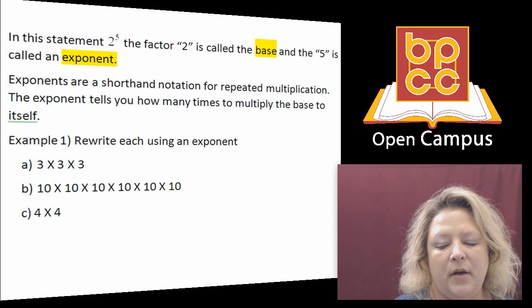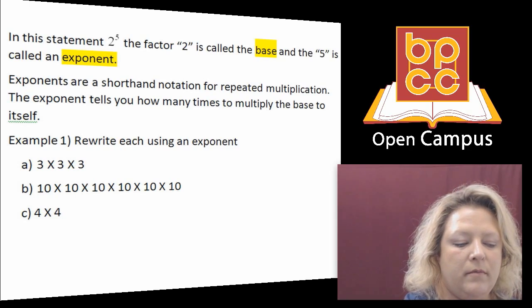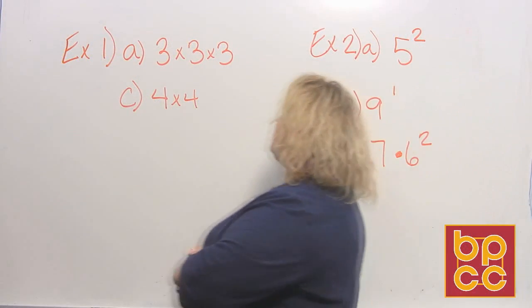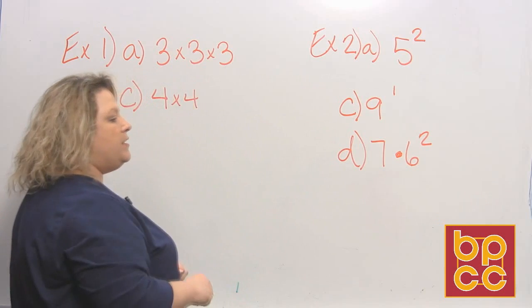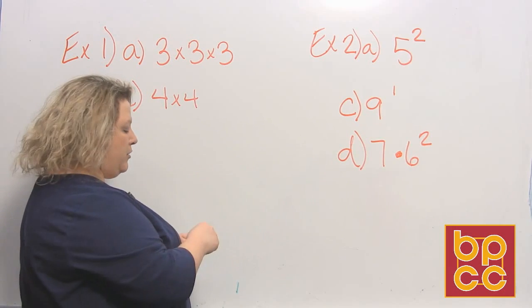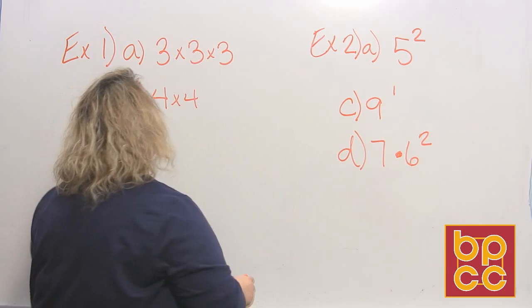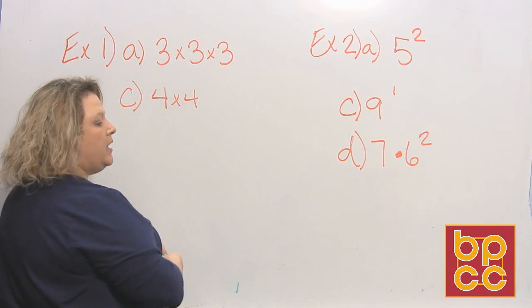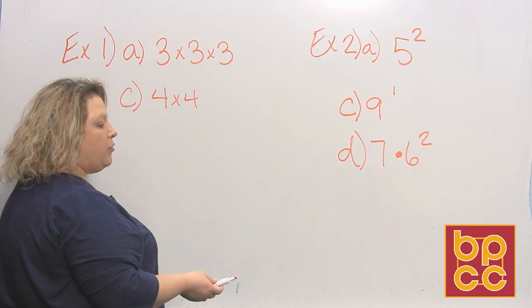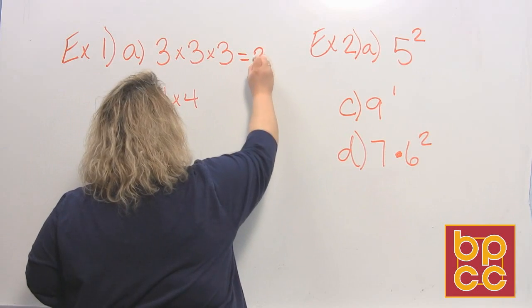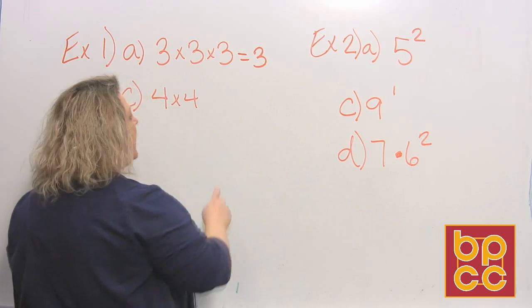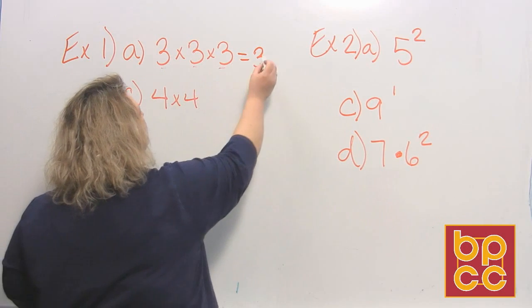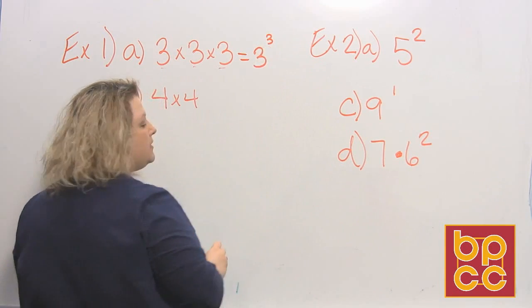So I've written a few examples up here on the board that we're going to do. The first one we're going to do, it says to rewrite each example and use an exponent. So the first one I have is three times three times three. If I wanted to write that in a short form, I could say my base is three. And I'm going to multiply it to itself one, two, three times. So that would be three to the third power.